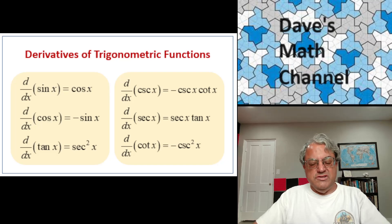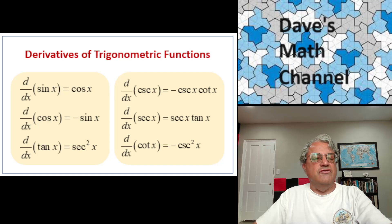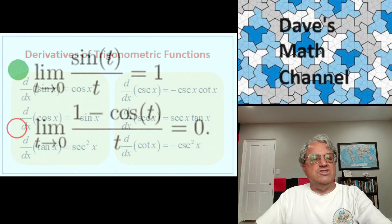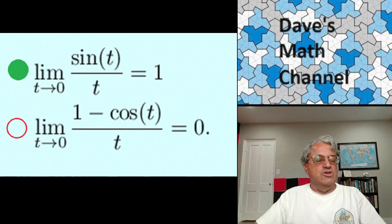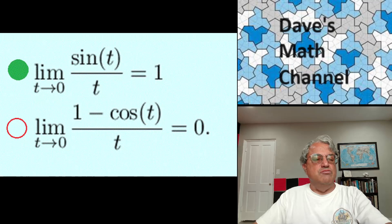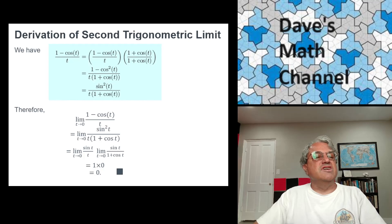So we want to derive these formulas. Let's start with the first two, sine and cosine. Those are actually the hardest ones to derive. Once we have those, you'll see that the other four are very easy. But sine and cosine require using limits. There's actually one more limit that I haven't derived yet. In the last video, I derived the limit as t approaches 0 of sine t over t equals 1. The second one I want to derive is the limit as t approaches 0 of 1 minus cosine t over t, which turns out to be 0.